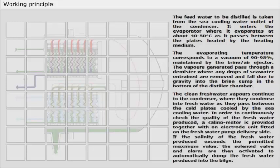The clean fresh water vapors continue to the condenser, where they condense into fresh water as they pass between the cold plates cooled by the sea cooling water.